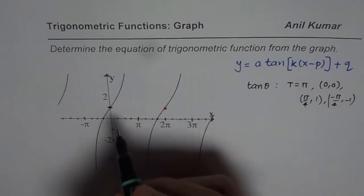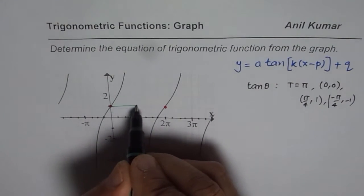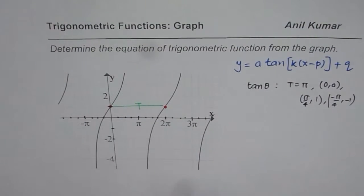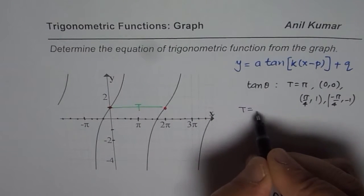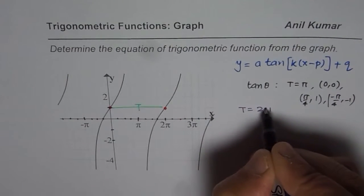So the time period for us is difference between these two. That is the time period. So from the graph, we can write down that the time period t is equals to 2 pi.